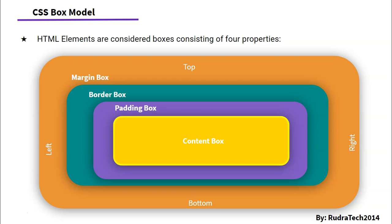So let's just say I want to calculate the width of an HTML element. It will consist of the width of the content box, then the width of the padding box on the left side and the right side — that is the width enclosing the content box — then the width of the border box on the left side and the right side, and lastly the width of the margin box on the left side.